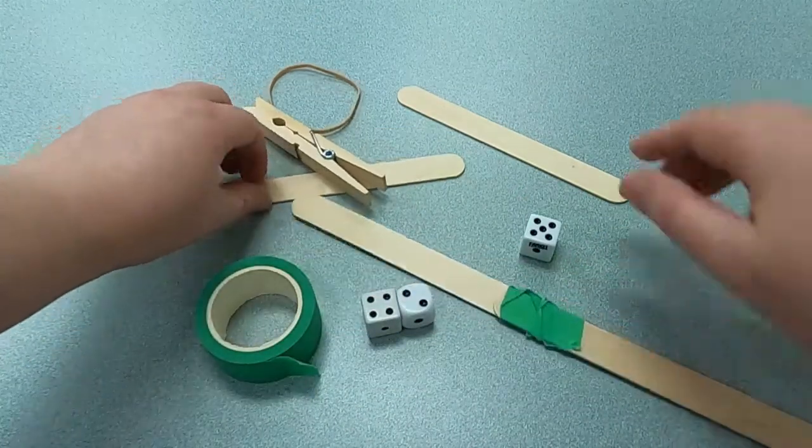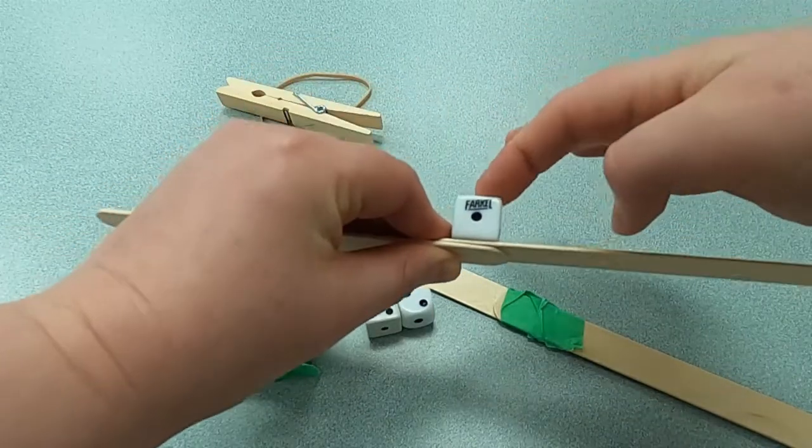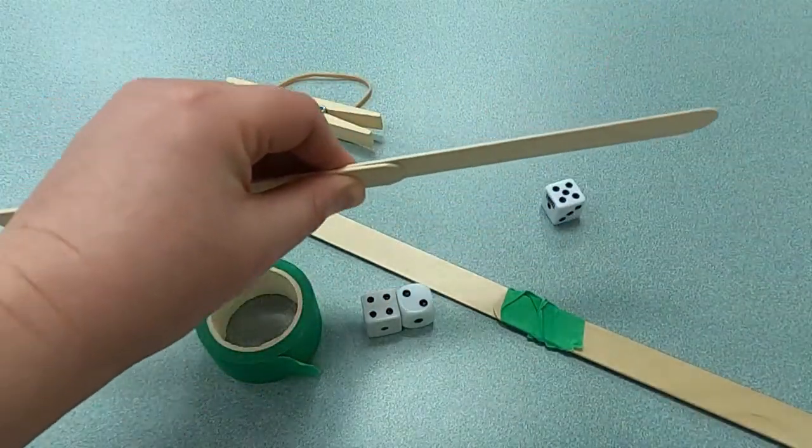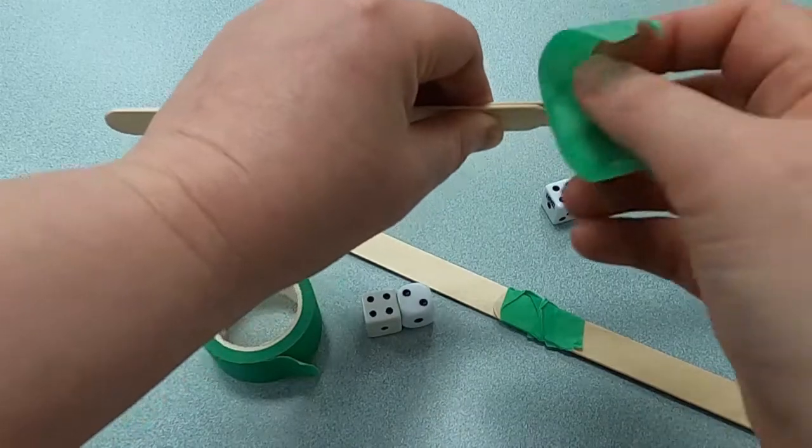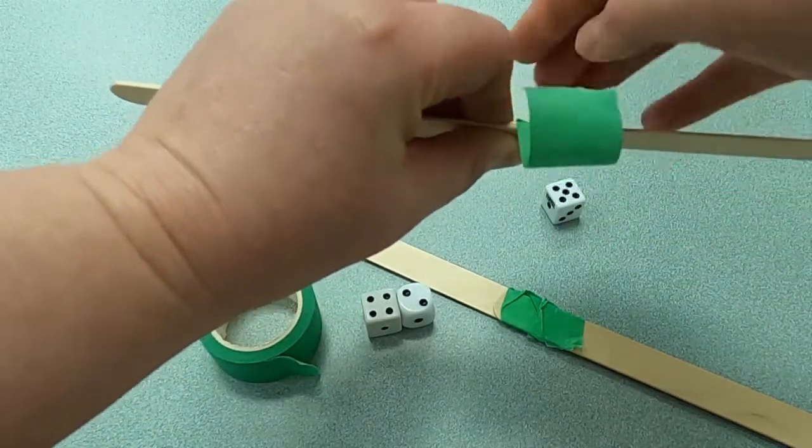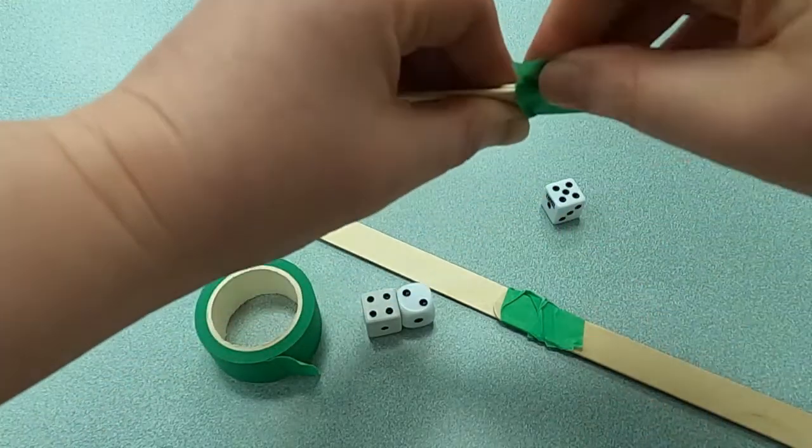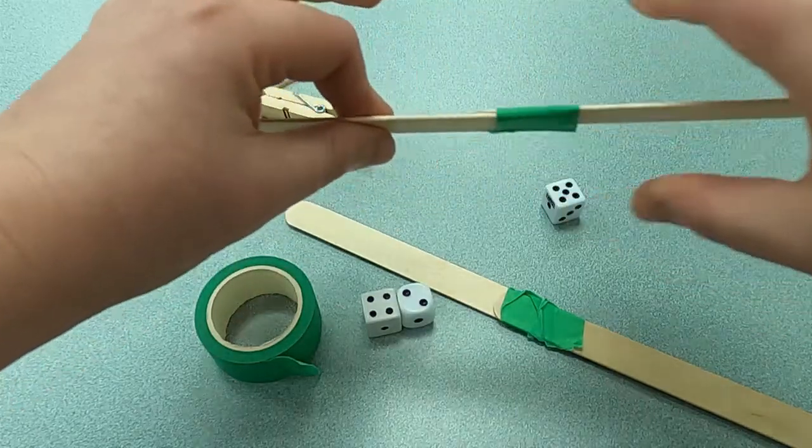Now let's make the top part. And we're going to do the same thing as before. We're going to make sure it overlaps enough for the dice piece to be on it. So I'm going to get another piece of tape. And I'm going to put it under, wrap it around, and that piece is now secure as well.